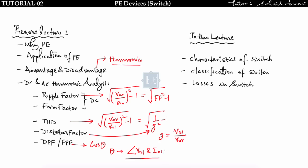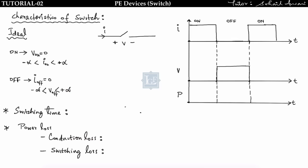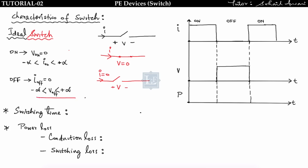In this lecture we will see the characteristics of switches, their classification, and the losses present in a switch. An ideal switch is one that possesses zero voltage drop during turn-on and can take infinite current during the on state. If we close this switch it can carry zero voltage drop and infinite current — positive or negative. In the off state the current must equal zero.